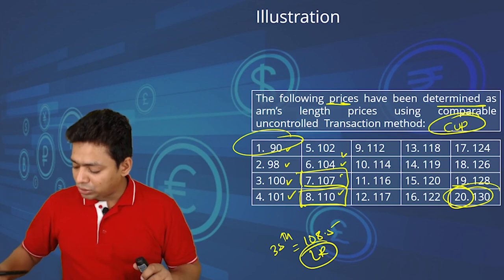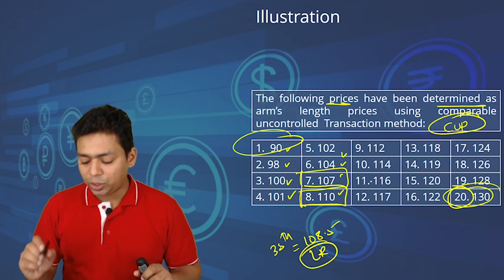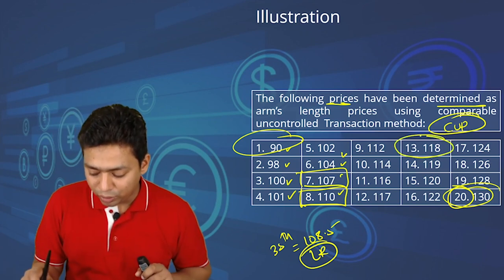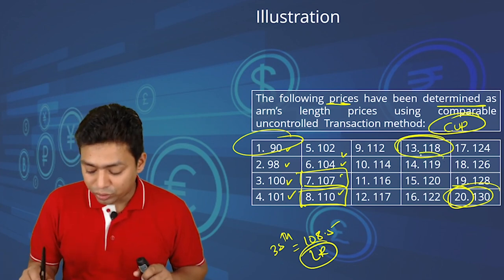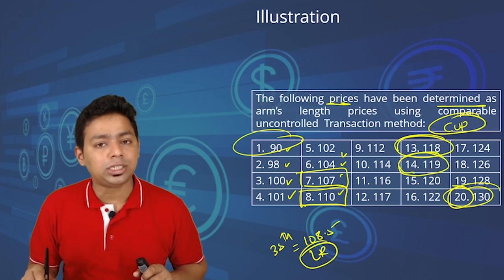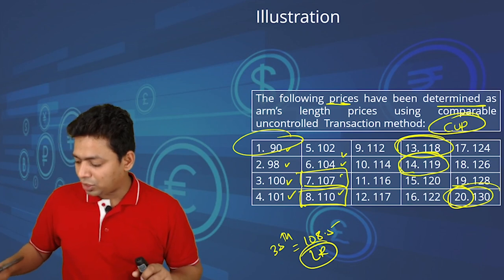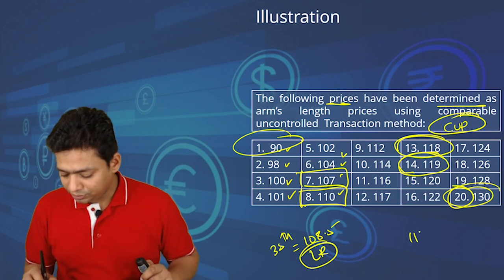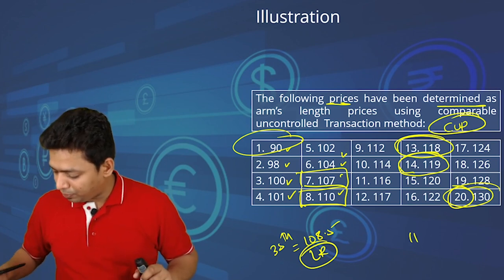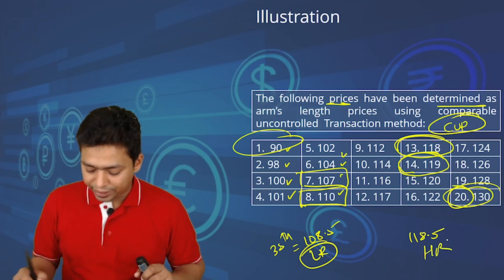For the 65th percentile: 20 × 65/100 = 13, also a whole number. We take the average of the 13th and 14th values: 118 plus 119 equals 237, divided by 2 equals 118.5. So the high range is 118.5. Any transaction value between 108.5 and 118.5 will be accepted as arm's length price without challenge.